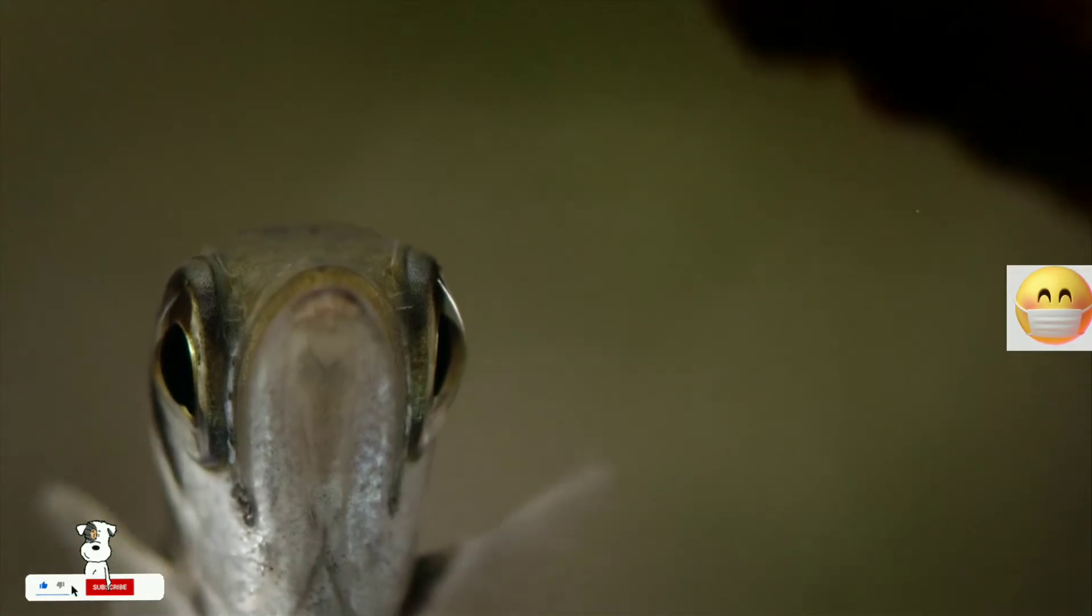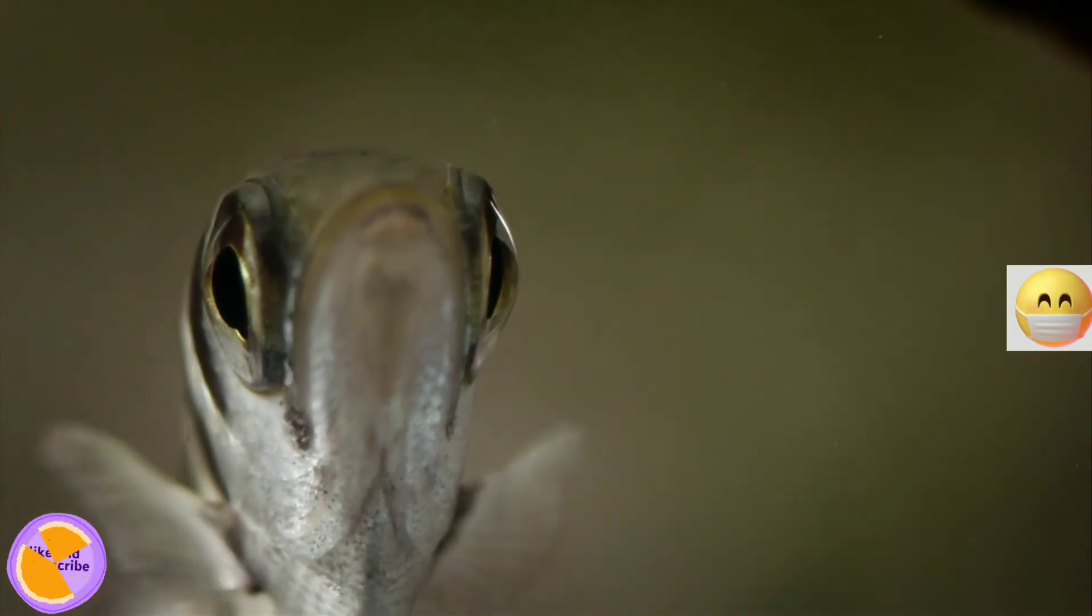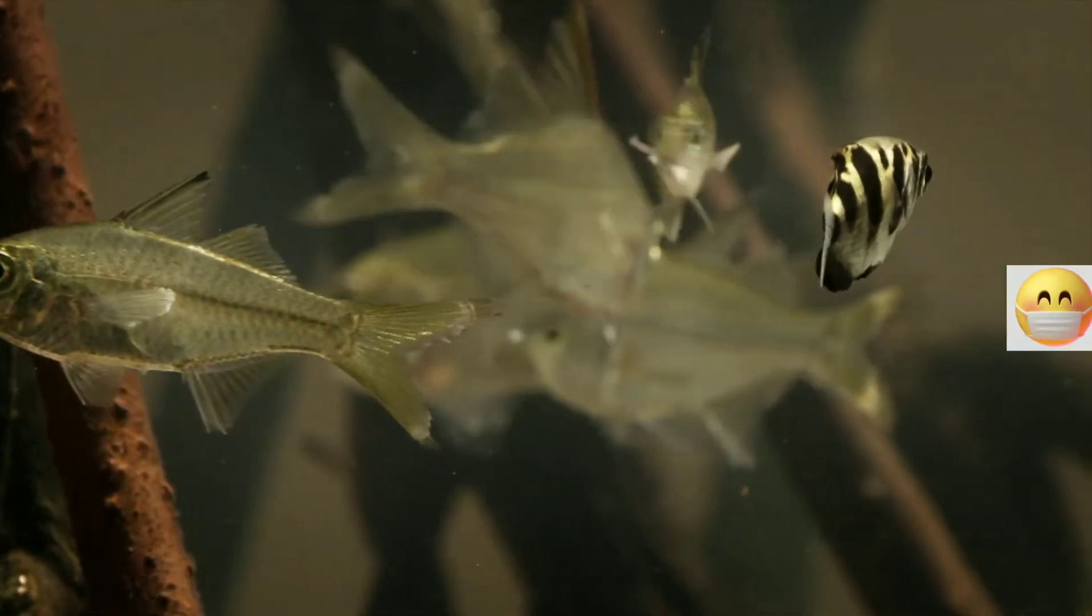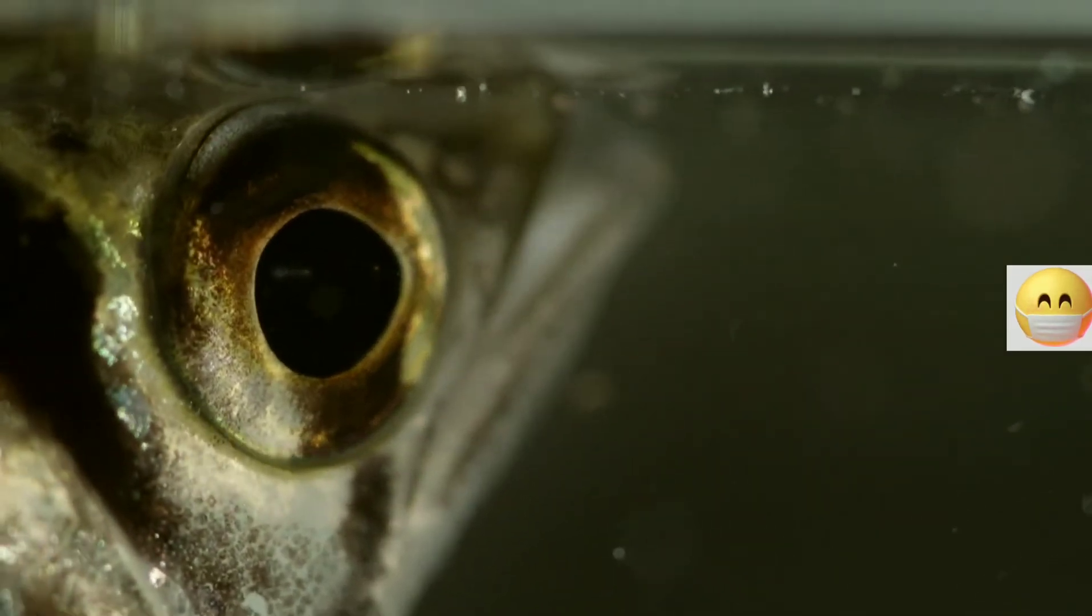The hunt begins with the archerfish's dual action eyes. The bottom part of the eye is used for living down in the murky brown water, but the tops of his eyes are suited for spying into the world above.